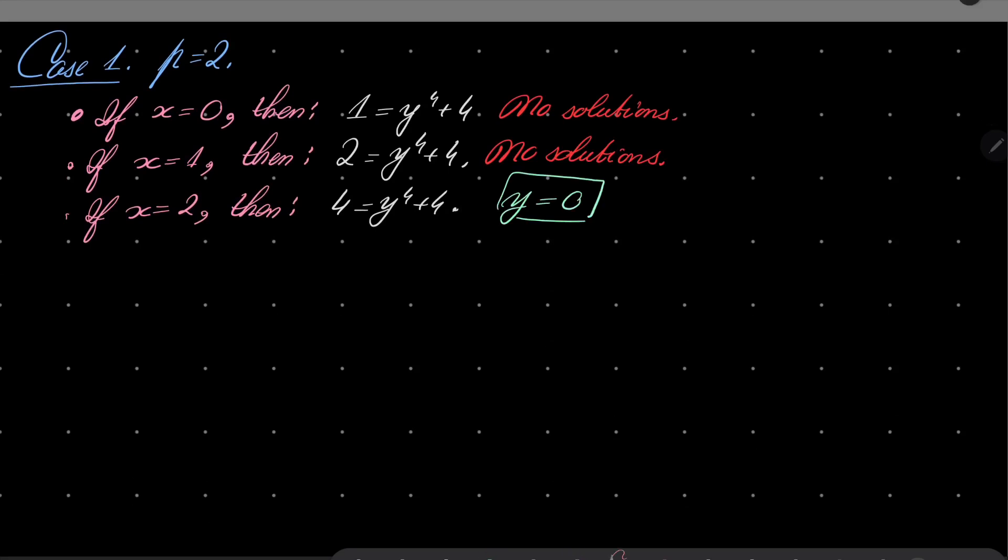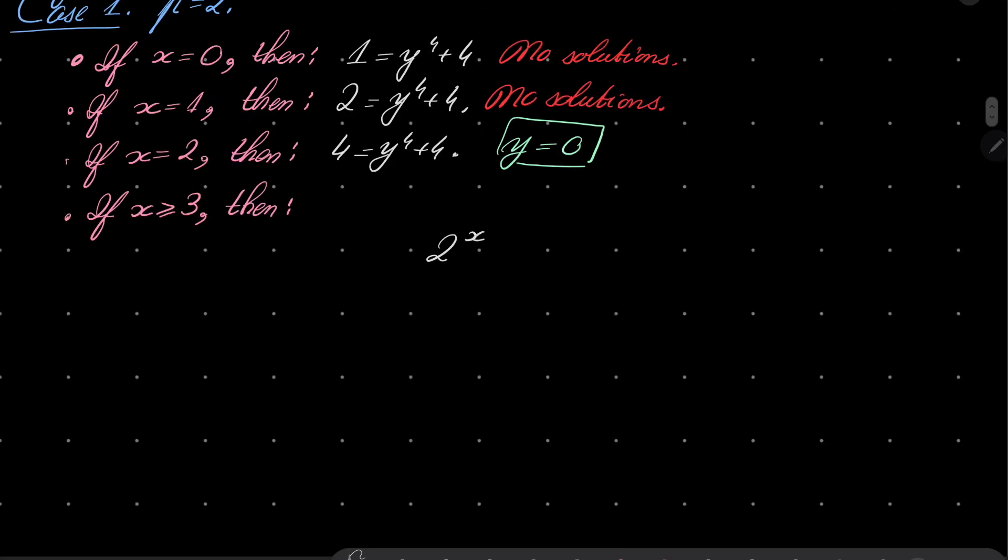Now let's consider the general case. If x is greater than or equal to 3, then 2^x = y^4 + 4. And notice that this is even, this is even, so y must be even.